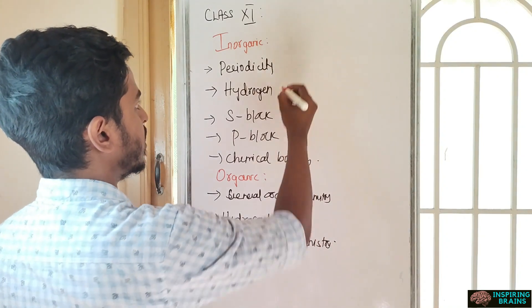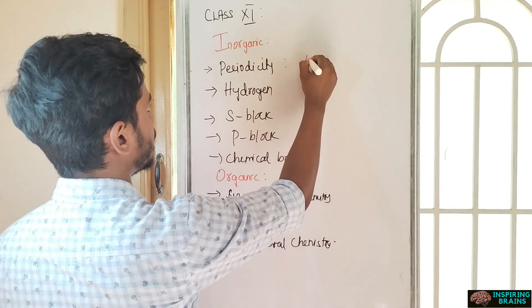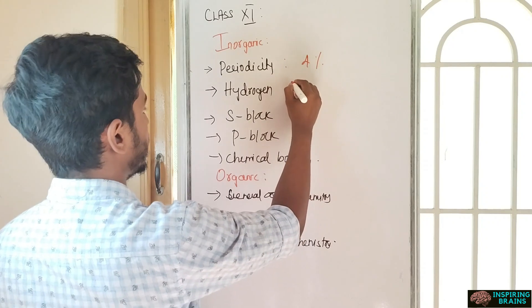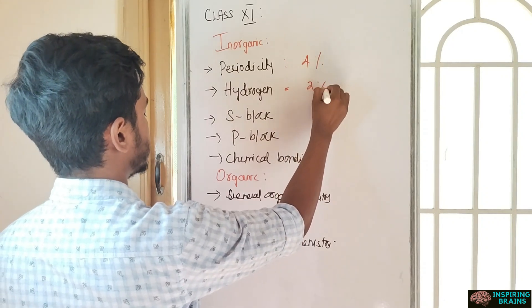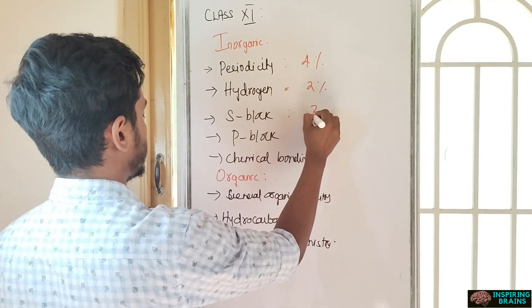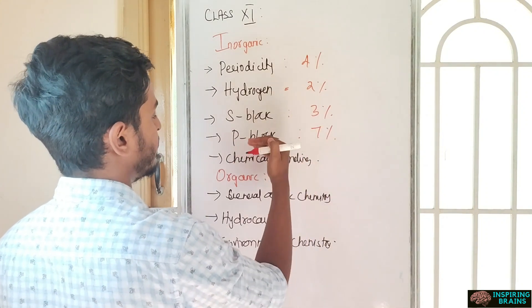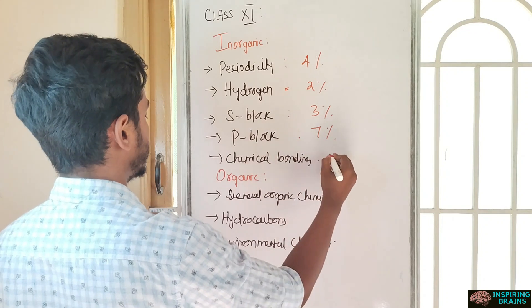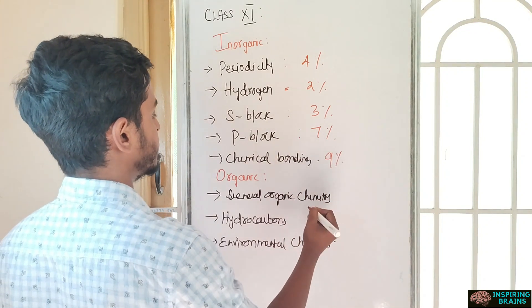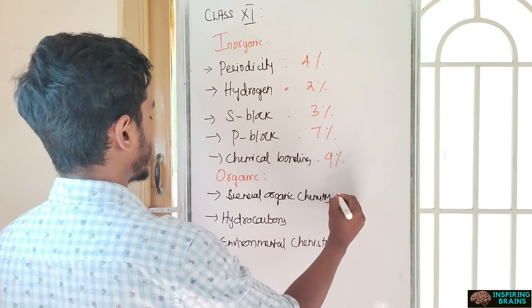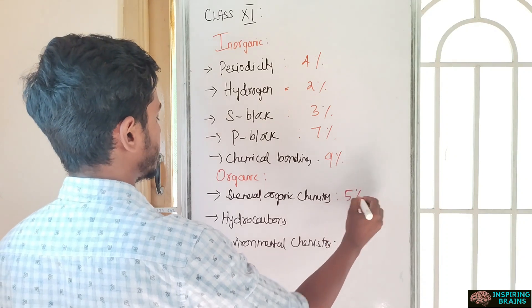Now I'll go with the weightage. Periodicity is 4%, hydrogen is 2%, S block 3%, P block put together 11th and 12th is 7%, and chemical bonding is 9%.